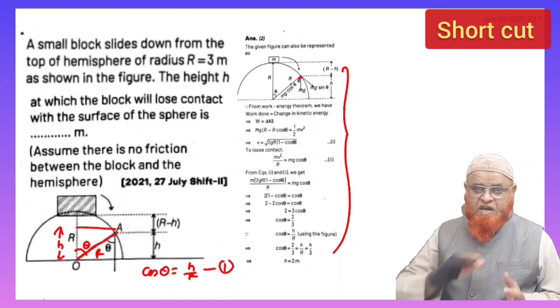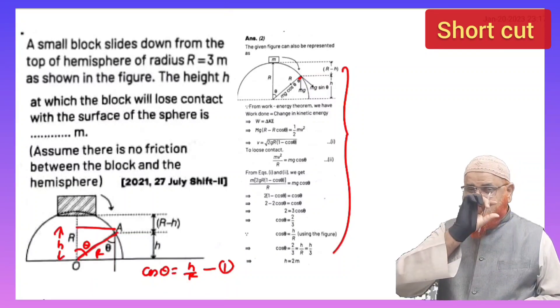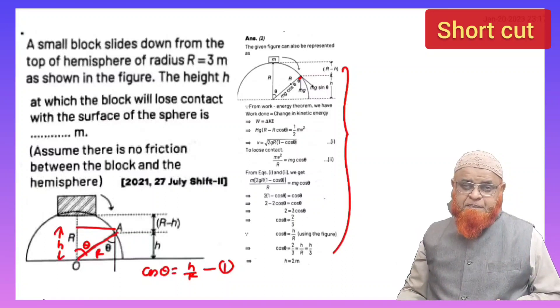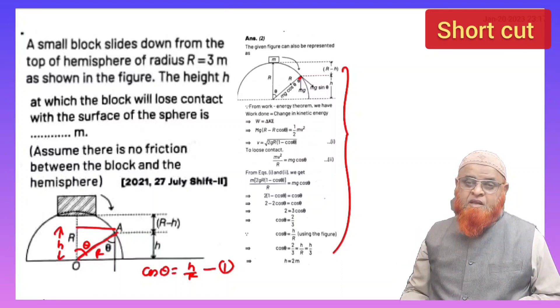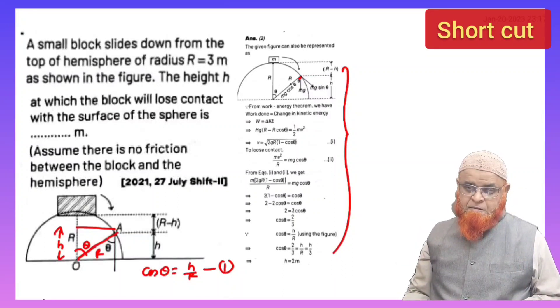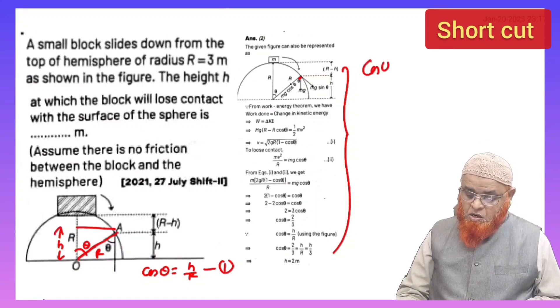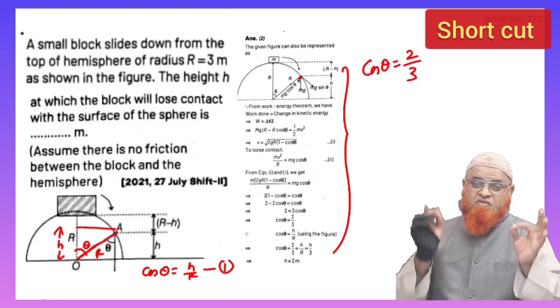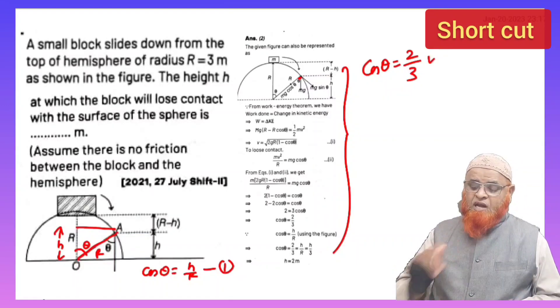Whenever a block is slipping down, when it is disconnected from the hemispherical bowl, you can just remember one shortcut: that cos θ will always be 2 by 3. Cos θ will always be 2 by 3 value you have to remember here.